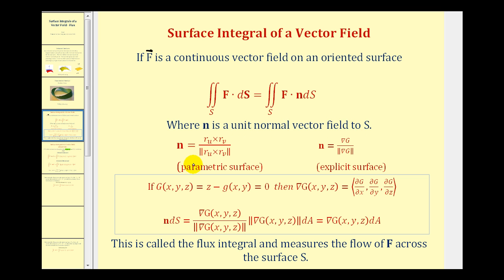So if our surface is given as a parametric surface, we use this formula here for n. If the surface is given explicitly, we use this formula here for n. This video will focus on explicit surfaces.